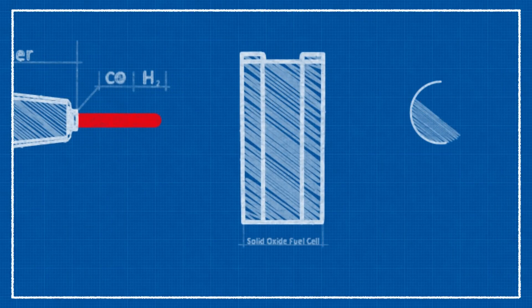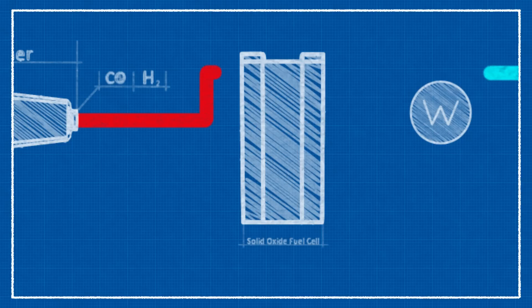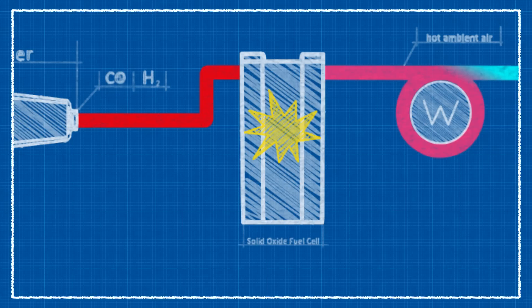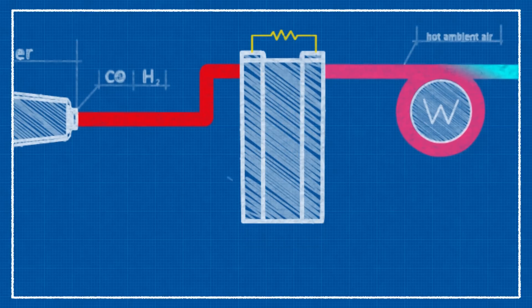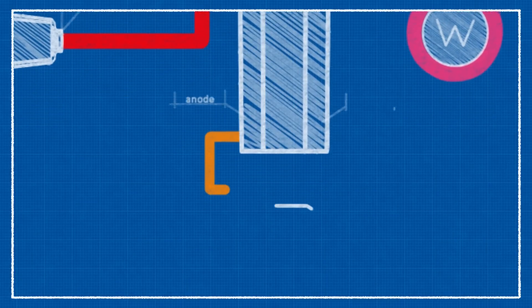Here, fuel is converted through an electrochemical reaction with oxygen ion coming from ambient air, previously heated up. This process releases an electron's flow, which produces power and exhausts from the anode.